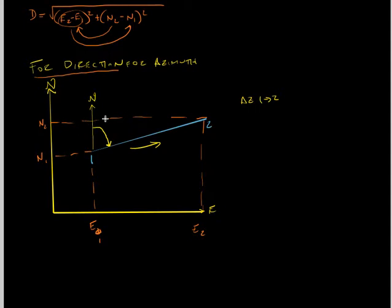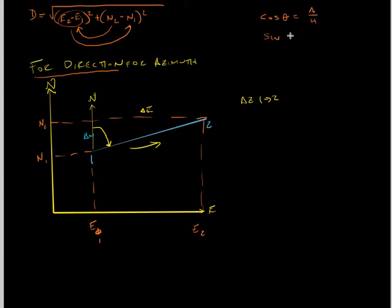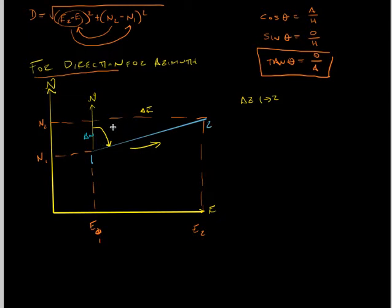How can we solve for that angle? It's using the change in northing and the change in easting. This little part is the change in northing and this part is the change in easting. We've used our trigonometric functions: cosine of theta equals adjacent over hypotenuse, sine of theta equals opposite over hypotenuse, and tangent of theta equals opposite over adjacent. We're going to use the tangent, because the easting is opposite and the northing is adjacent to the angle we want.